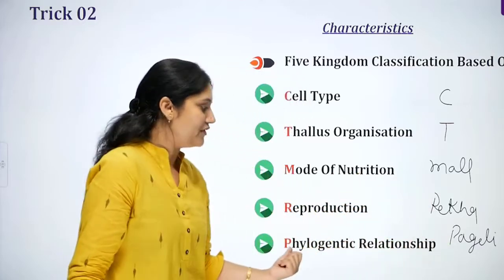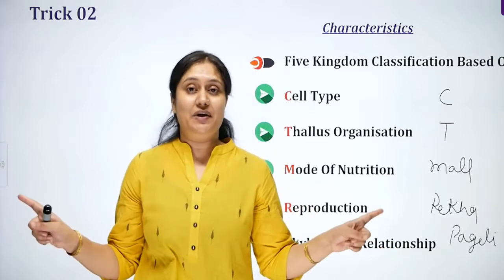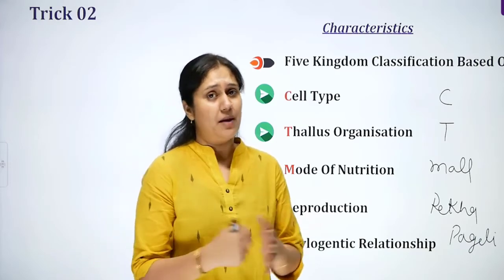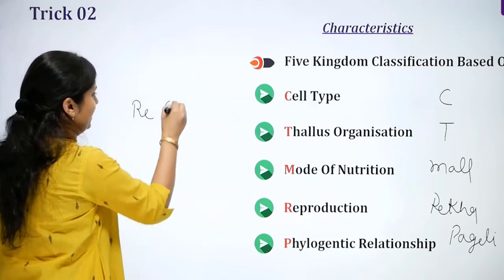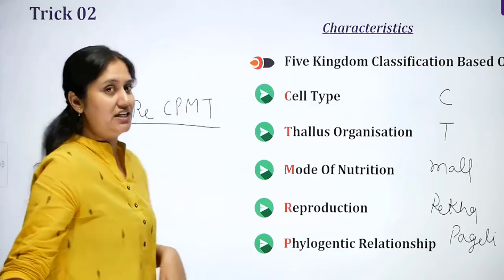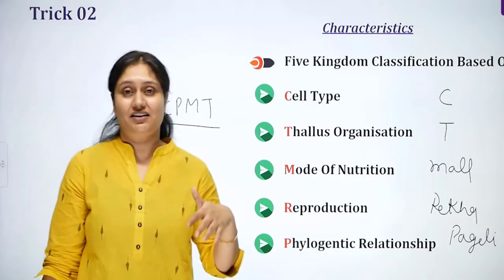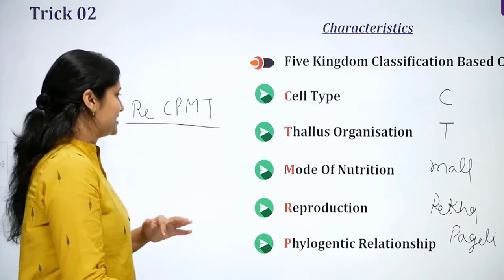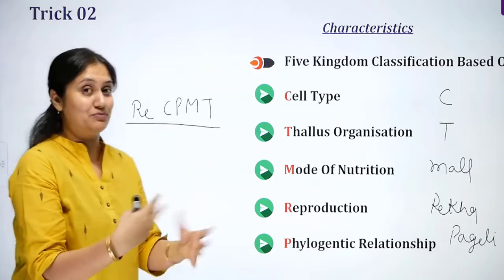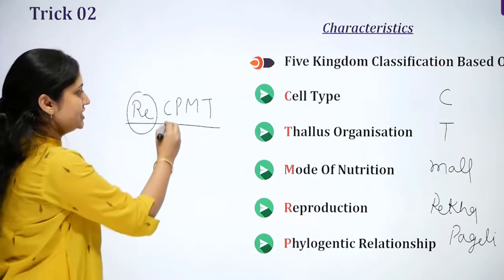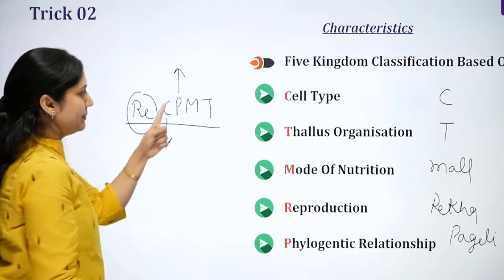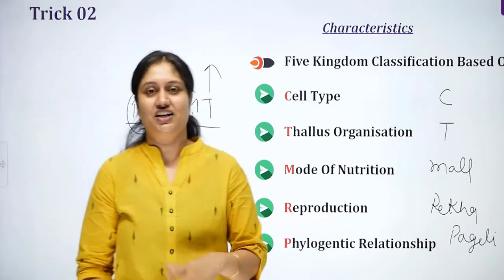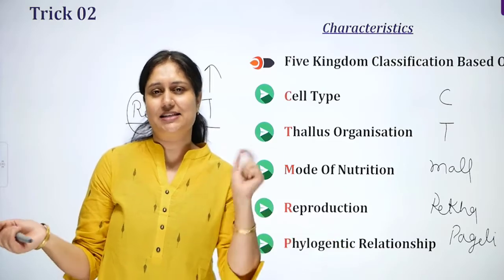The trick is Re-CPMT. Re for Reproduction, C for Cell Type, P for Phylogenetic Relationship, M for Mode of Nutrition, T for Thallus Organization. So you have to remember these 5 characteristics. The simple trick is Re-CPMT — now you know all five criteria of the five-kingdom classification.